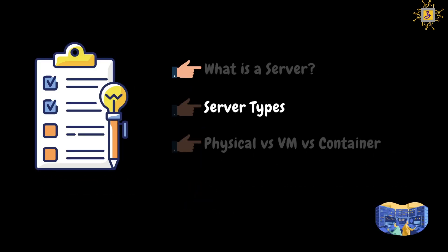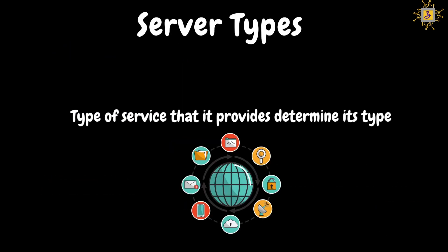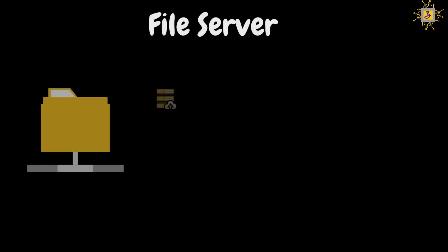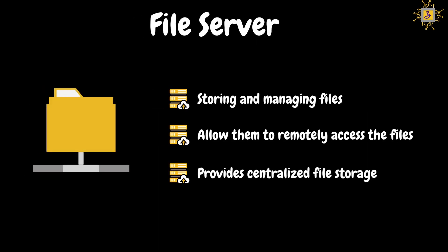Now let's look at different types of servers. Basically, the type of server is determined by the service that it is providing. File server: a file server is dedicated to storing and managing files. It allows users to access them remotely over a network, provides centralized file storage, and also facilitates file sharing and collaboration.